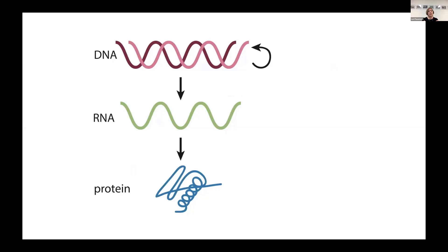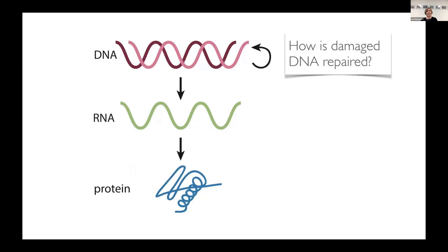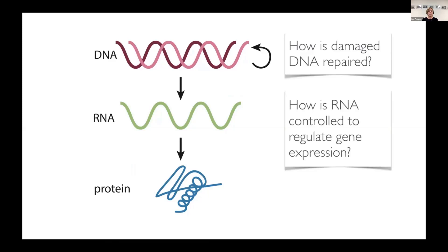The main questions that we want to address in my lab are: how is damaged DNA repaired, and how is RNA controlled to regulate gene expression? All of these processes are controlled by proteins. So in the lab, we design experiments to tell us how these proteins work. This includes growing cells, purifying proteins, doing assays, using microscopes, and analyzing data using sophisticated computer programs.